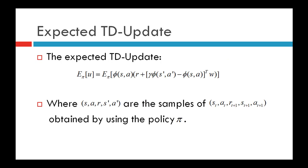The expected TD update, where expectation is taken over the policy for which we want to compute the value function, is given as the expected value of phi(S, A) times R plus gamma times phi(S', A') minus phi(S, A) transpose W, where R is the immediate reward obtained when the agent takes action A in state S and transitions to state S'. Here S, A, R, S', A' are samples of S_T, A_T, R_{T+1}, S_{T+1}, A_{T+1} obtained using policy pi.